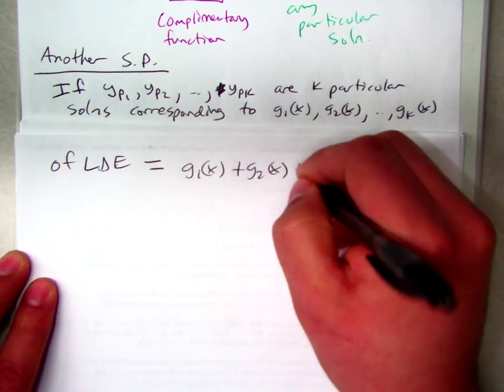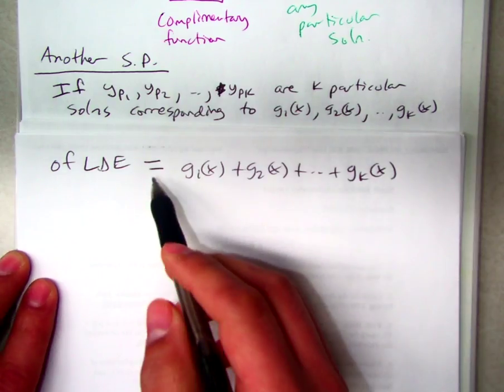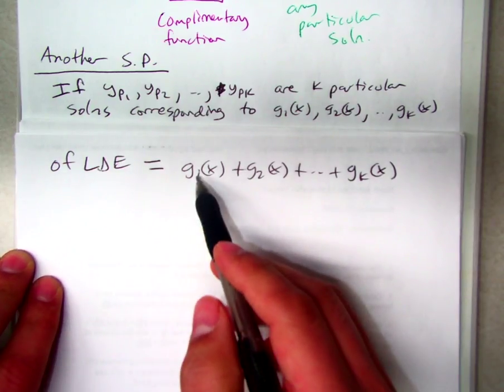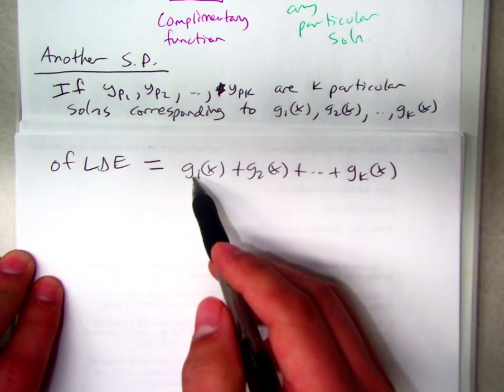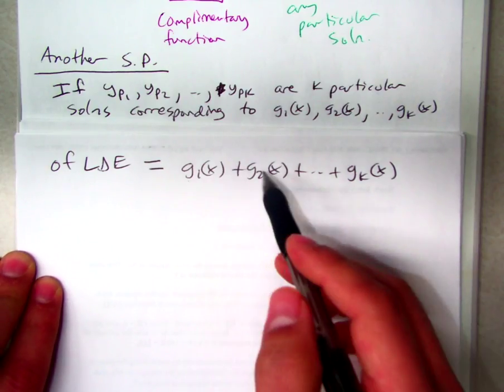So basically what we're doing is looking at star 2, but instead of having just one function, G1 of X, maybe we're splitting it up. There's a lot of different terms, and we're calling them G1 plus G2 and so on.